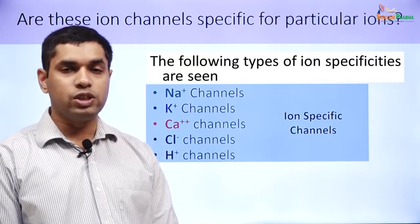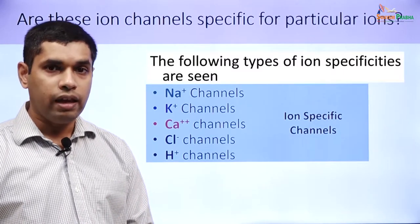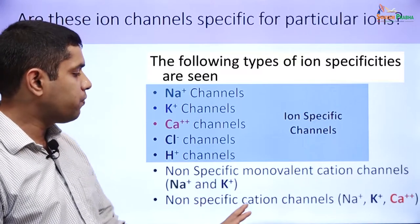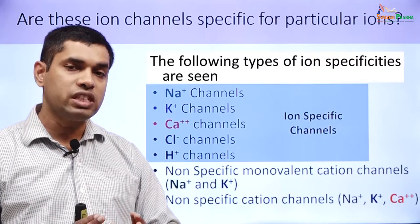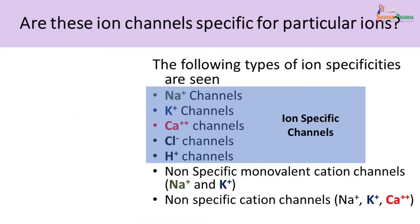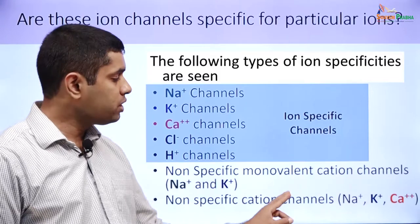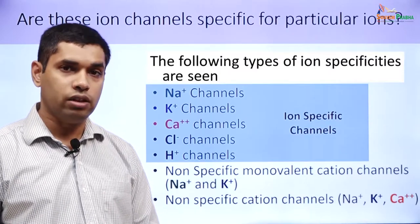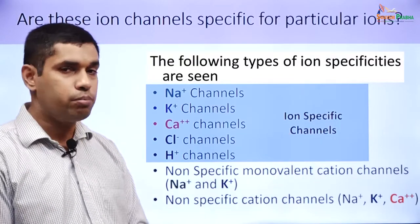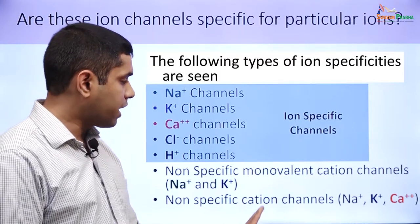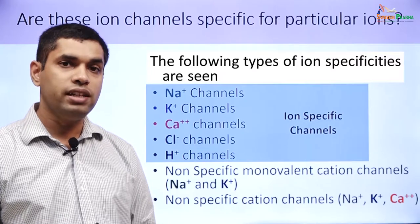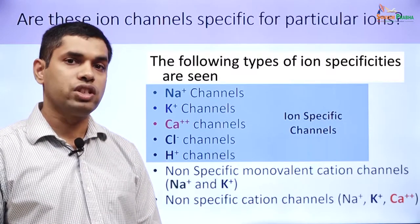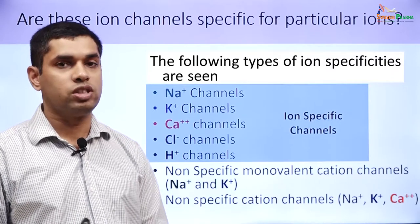There are other channels which permit a similar type of ions to pass through — these are non-specific channels. An example of non-specific channels are non-specific cation channels, which permit any cation — sodium, potassium, or calcium — to pass through. A non-specific monovalent cation channel permits only monovalent cations, that is sodium and potassium, to pass through. So when talking about the specificity of an ion channel, you could have ion-specific channels or non-specific channels, with the important non-specific ones being non-specific cation channels and non-specific monovalent cation channels.